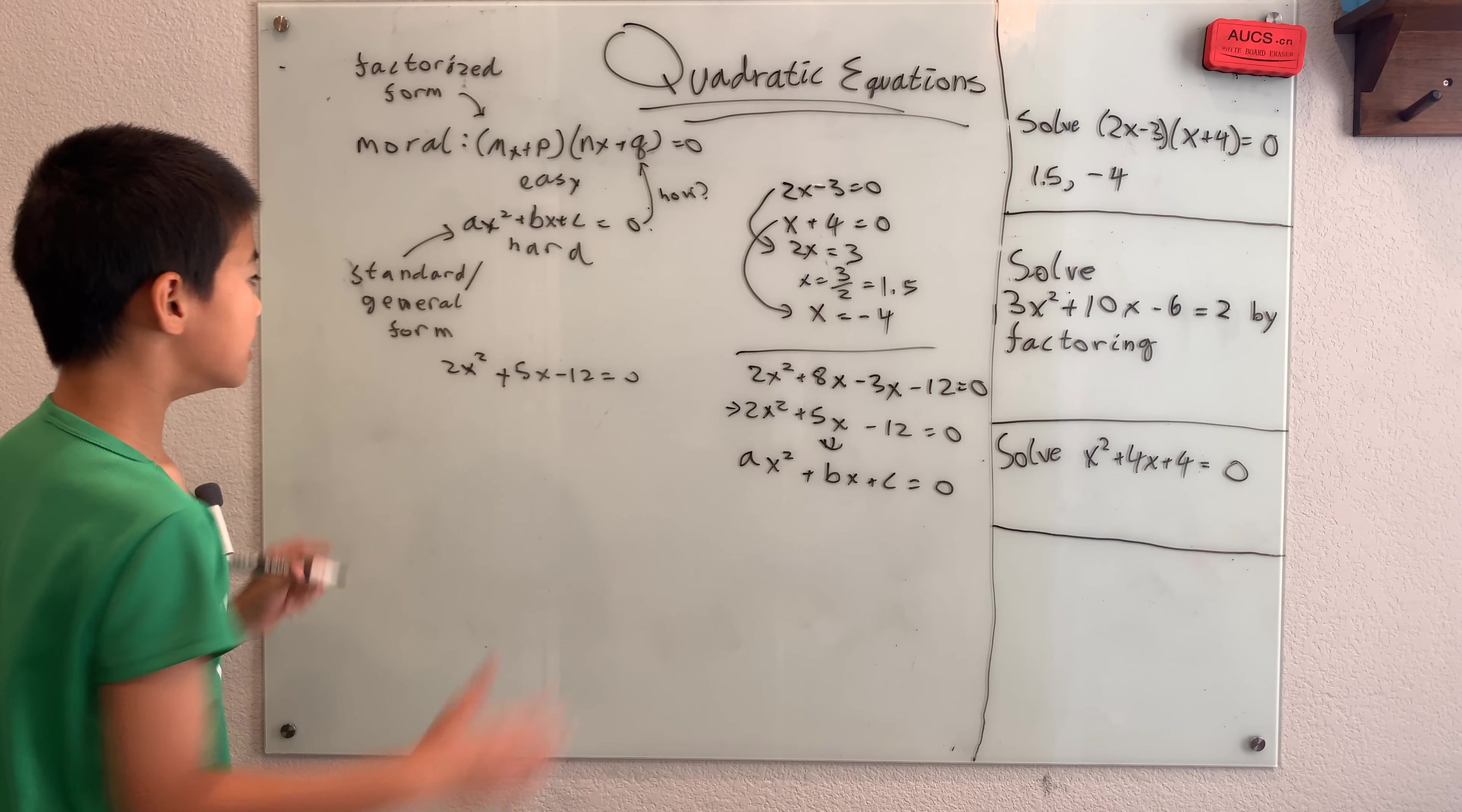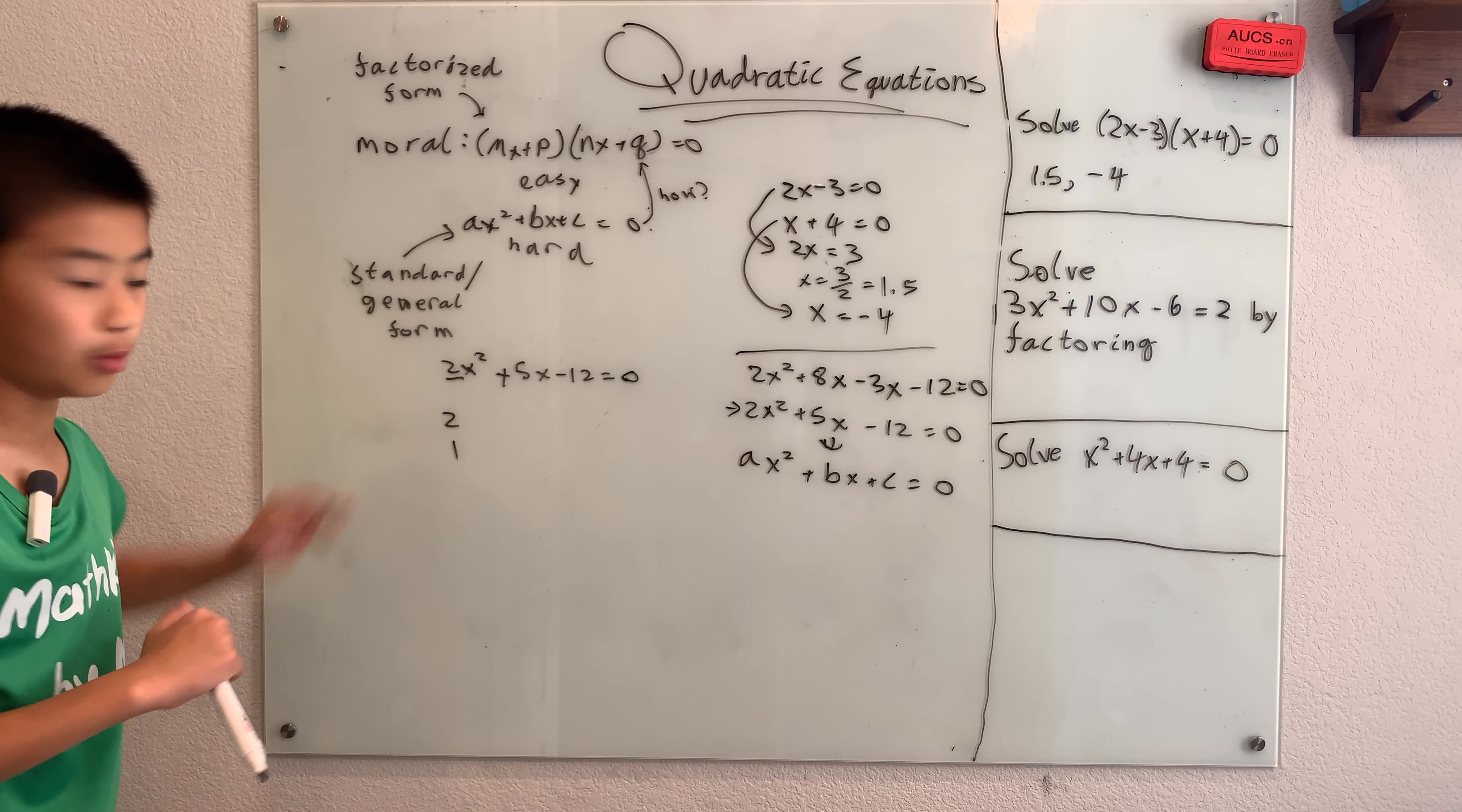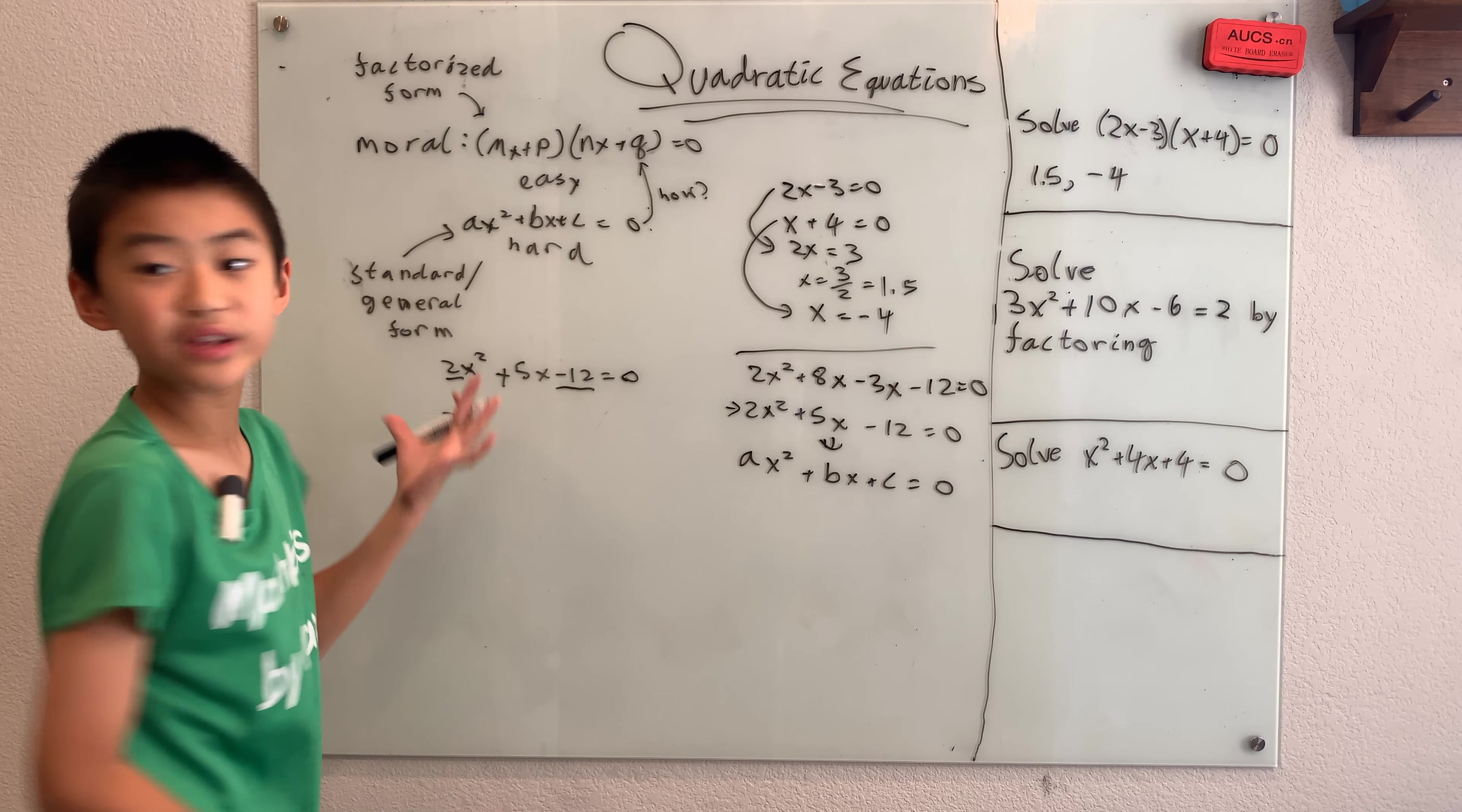So, what happens here is, when you have this, you first look at the a in the equation. Well, the a here is just 2x squared, so the a, well, then you break that up into factors. Well, here a is prime, so there's only one way to break that up into factors, 2 and 1, and then look at the c, which here is negative 12, not 12, because it's bx plus c instead of minus c, so this would be 2x squared plus 5x plus negative 12, so c is negative 12, and then you break that into factors.